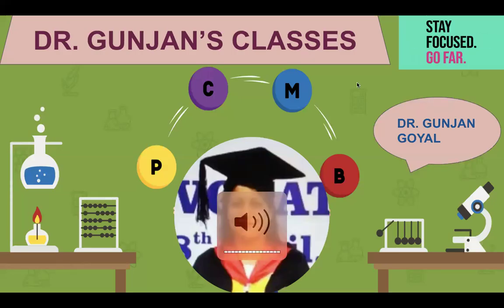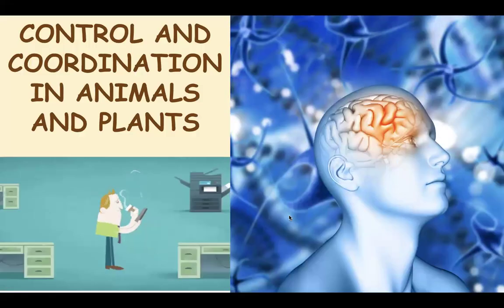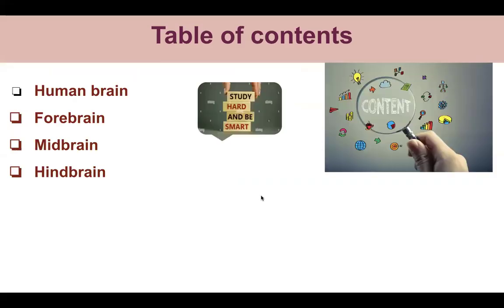Hello everyone, welcome to our channel. Today we are going to do another part of chapter number two - control and coordination in animals and plants. This is unit number two, second chapter, and today we are going to study about the human brain. We have already studied the basic structure and its function, and we previously covered the reflex section. If you want to watch that video, I will share the link in the description box.